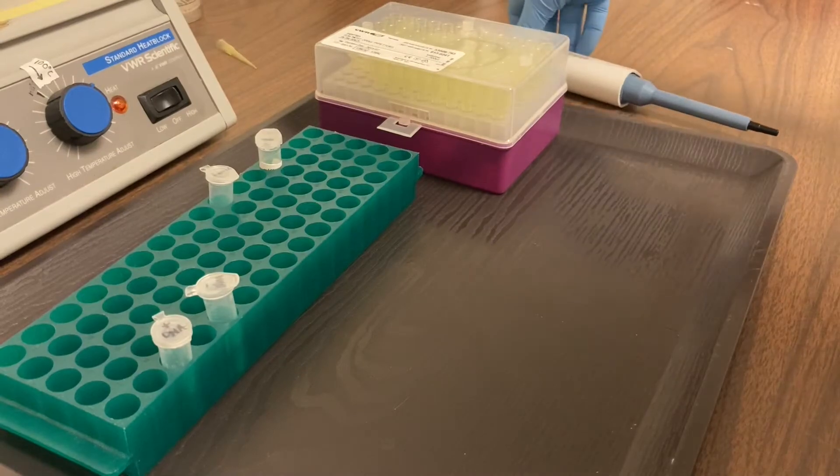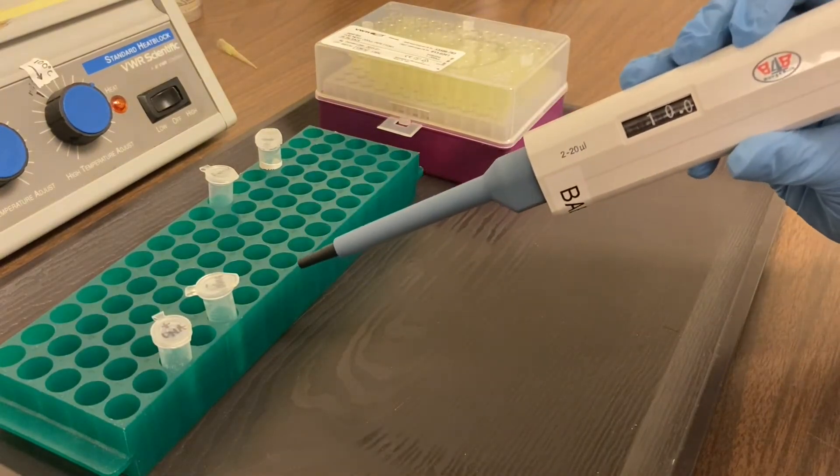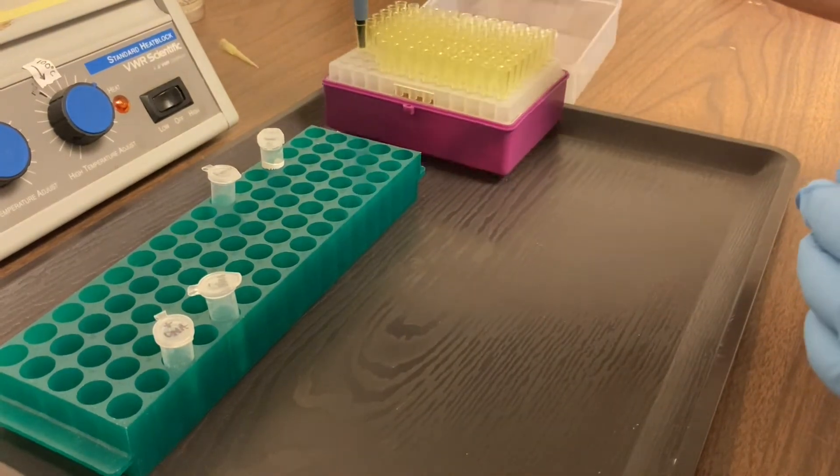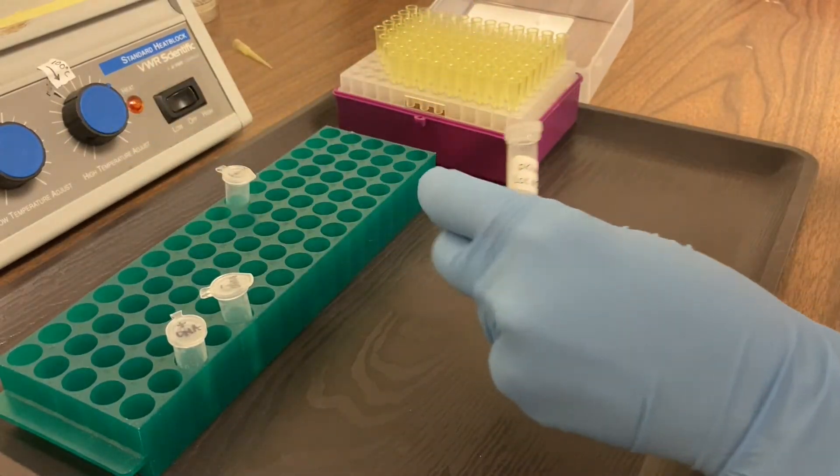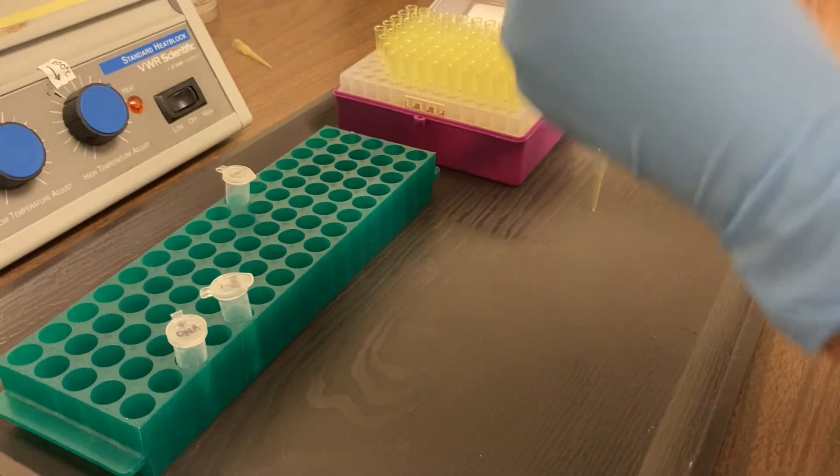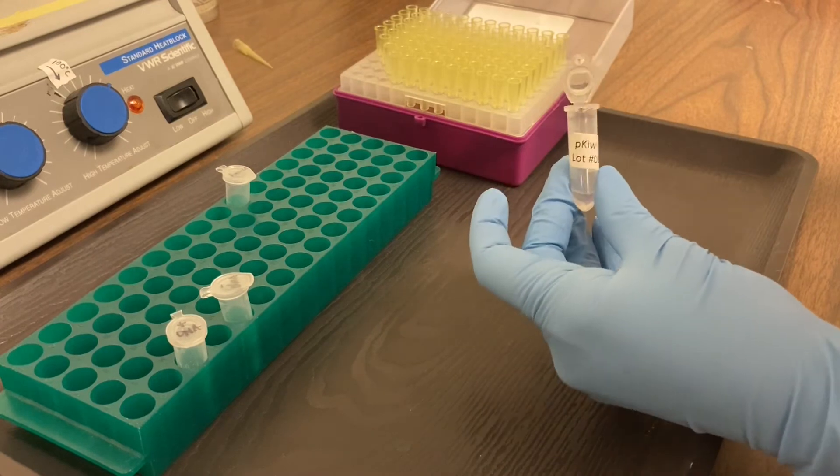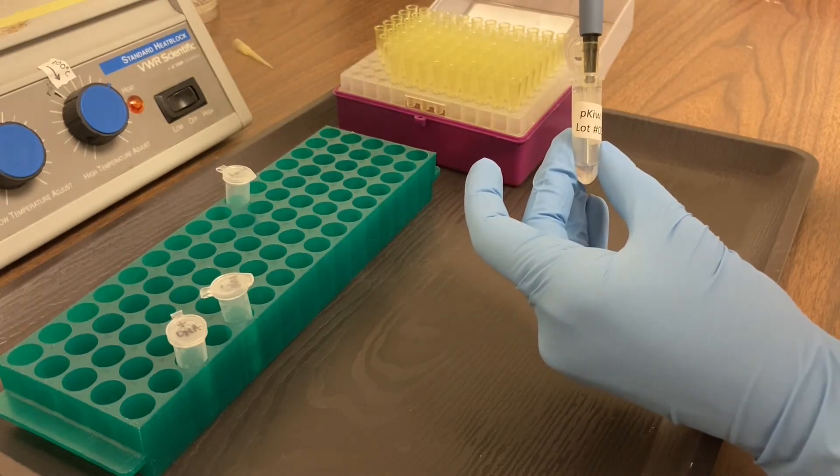So now we're ready to add our plasmid DNA. We set our micropipet to 10 microliters. We get a fresh tip on there. Here's our plasmid DNA, and we're going to add this to only one of these tubes. We're going to add it to the tube that is labeled plus DNA.